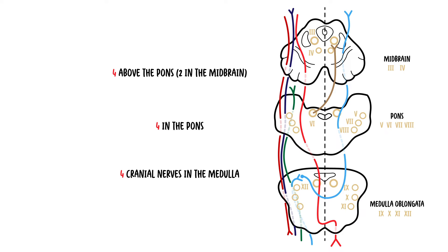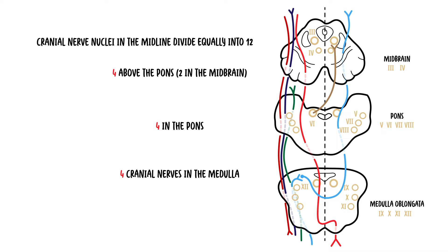The fourth rule is that the four cranial nerve nuclei located in the midline can be remembered because their numbers divide equally into twelve, except one and two. These midline cranial nerves are 3, 4, 6, and 12. Cranial nerves 5, 7, 9, and 11 are in the lateral aspects of the brainstem. Notably, all the midline cranial nerves — 3, 4, 6, and 12 — are motor nerves.